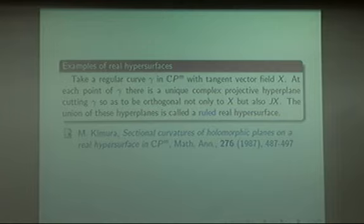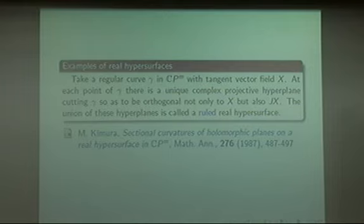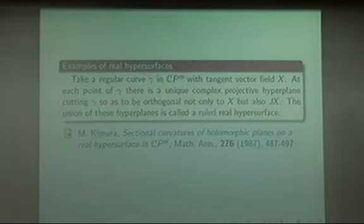Take a regular curve gamma in complex projective space with tangent vector field X. At each point of gamma, there is a unique complex projective hyperplane cutting gamma so as to be orthogonal not only to X but also to JX. The union of these hyperplanes is called the ruled real hypersurface.